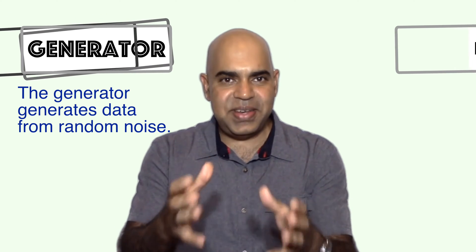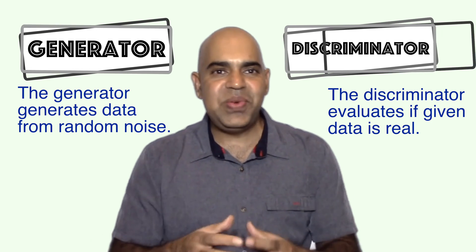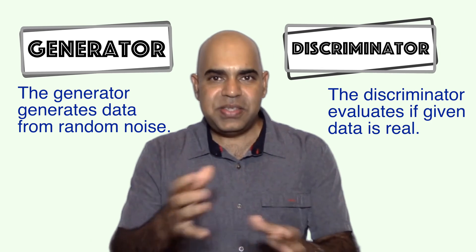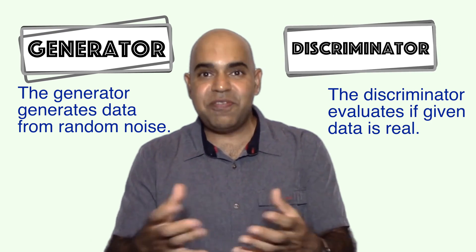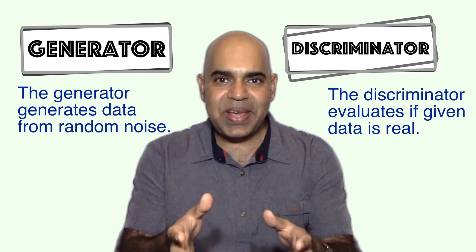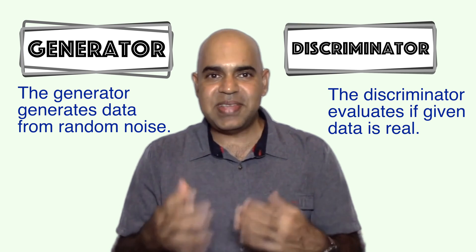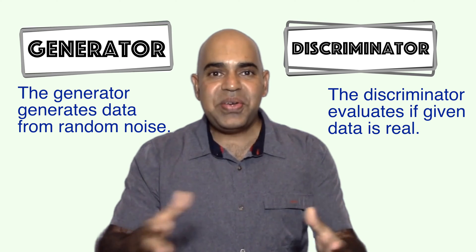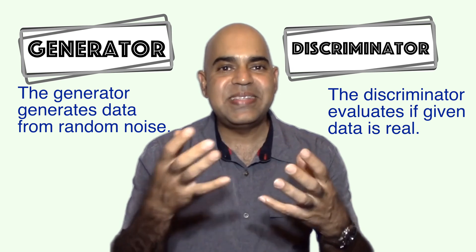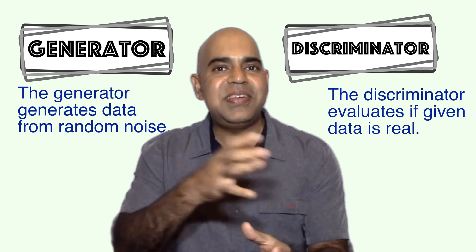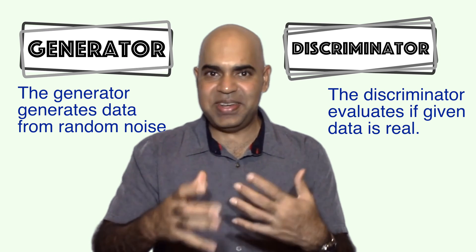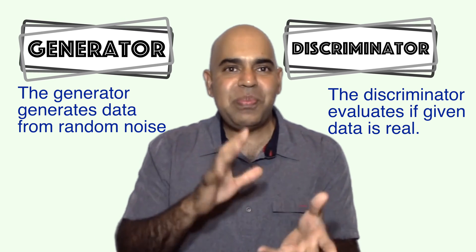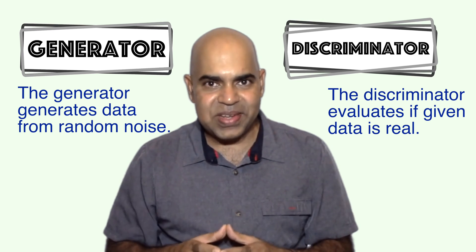At its core, a GAN consists of two neural networks: the generator, which generates data, and the discriminator, which evaluates the generated data. Generative data is sometimes called fake data. These two networks are trained together simultaneously. The generator continuously improves its ability to create better data, while the discriminator gets better at distinguishing real data from generated ones or fake ones.